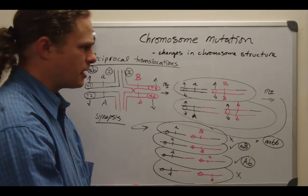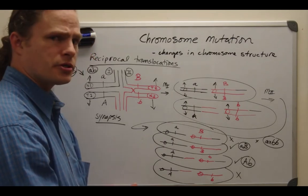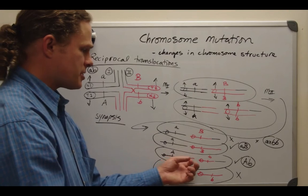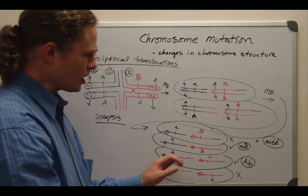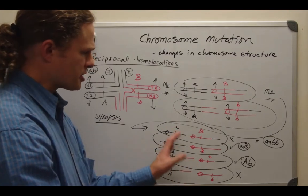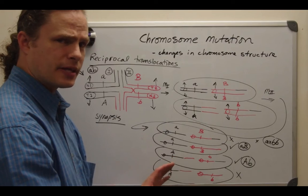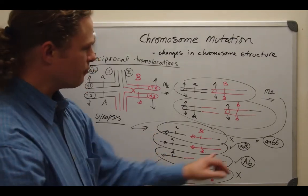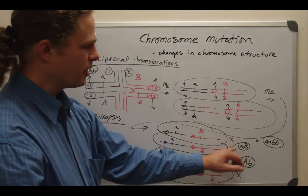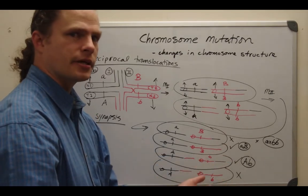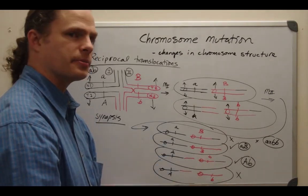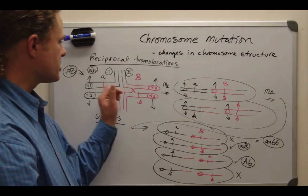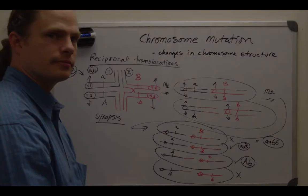Fully fertile organisms have normal structures — they are normal structure homozygotes. Semi-sterile individuals are reciprocal translocation heterozygotes. That's not to be confused with things that simply don't survive: if it survives and it's semi-sterile, then it is a reciprocal translocation heterozygote. In the next segment we'll discuss the double crossover event.